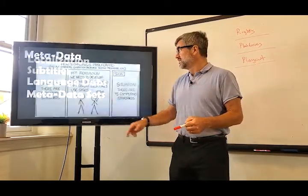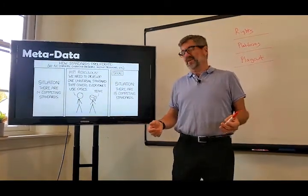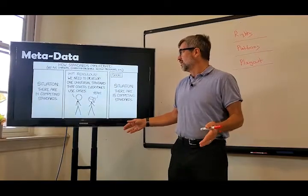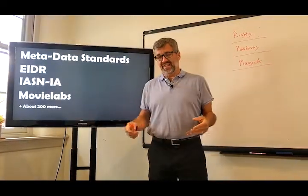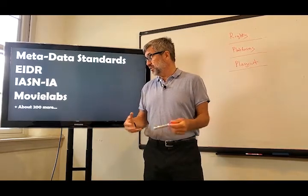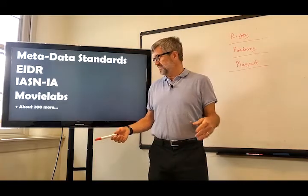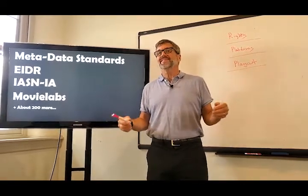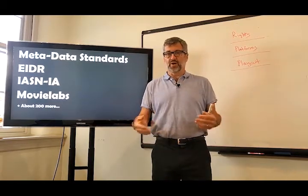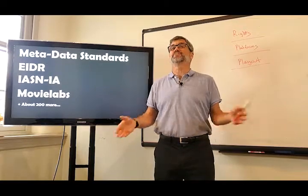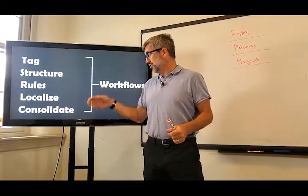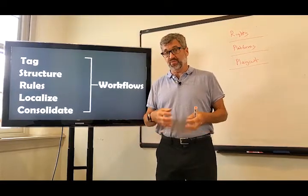There's a lot of standards. As this old XKCD cartoon says, as soon as people say there's too many standards, let's make one standard — now there's more standards. It's almost comical. In the content industries we have metadata standards. Right now the biggest and most rapidly emerging standard is EIDR, and then there's a subset of that merging now, ISN-IA. Movie Labs is in there. There are at least 200 more standards, plus the clients themselves have standards — you'll see a metadata standard at NBCUniversal and another one at Disney. They all try to standardize but never do. So it's a metadata mess, but that's part of packaging: tagging it, structuring it, putting the rules together, consolidating in a workflow, making a media object ready for distribution.